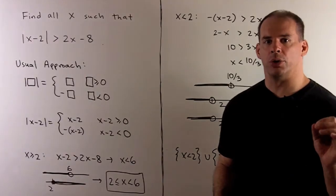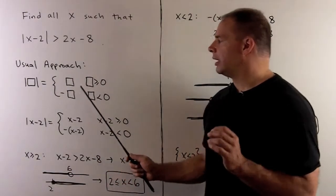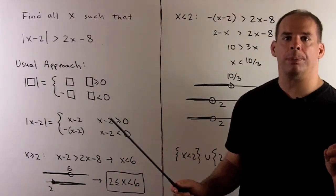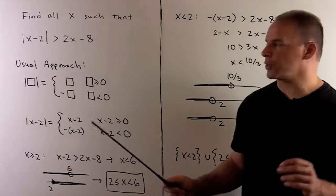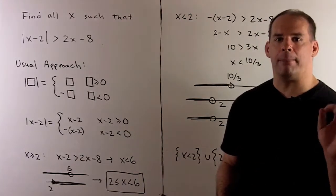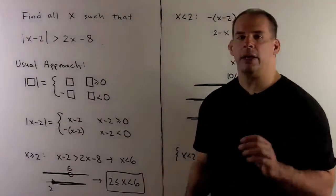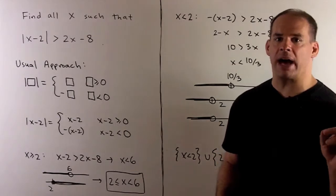Let's recall our usual approach. If I take the absolute value of box, if box is greater than or equal to 0, we leave it alone, so we just get box back. If box is negative, multiply by minus 1 to remove the minus sign, so I'll have minus box.